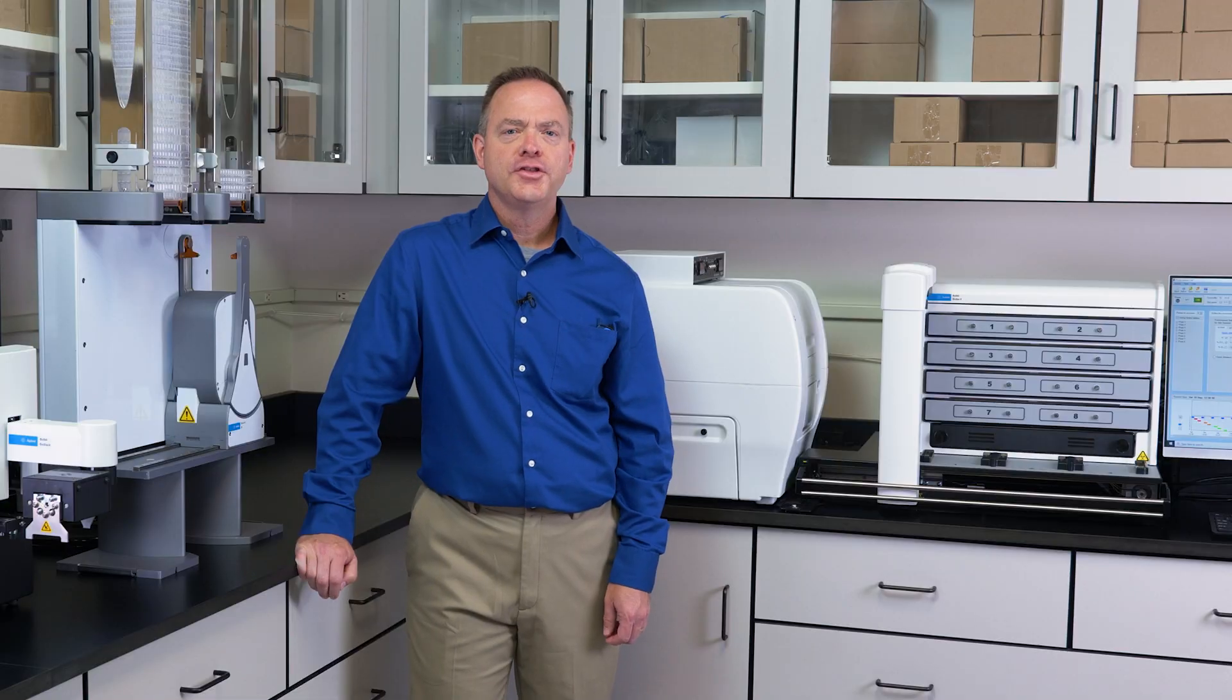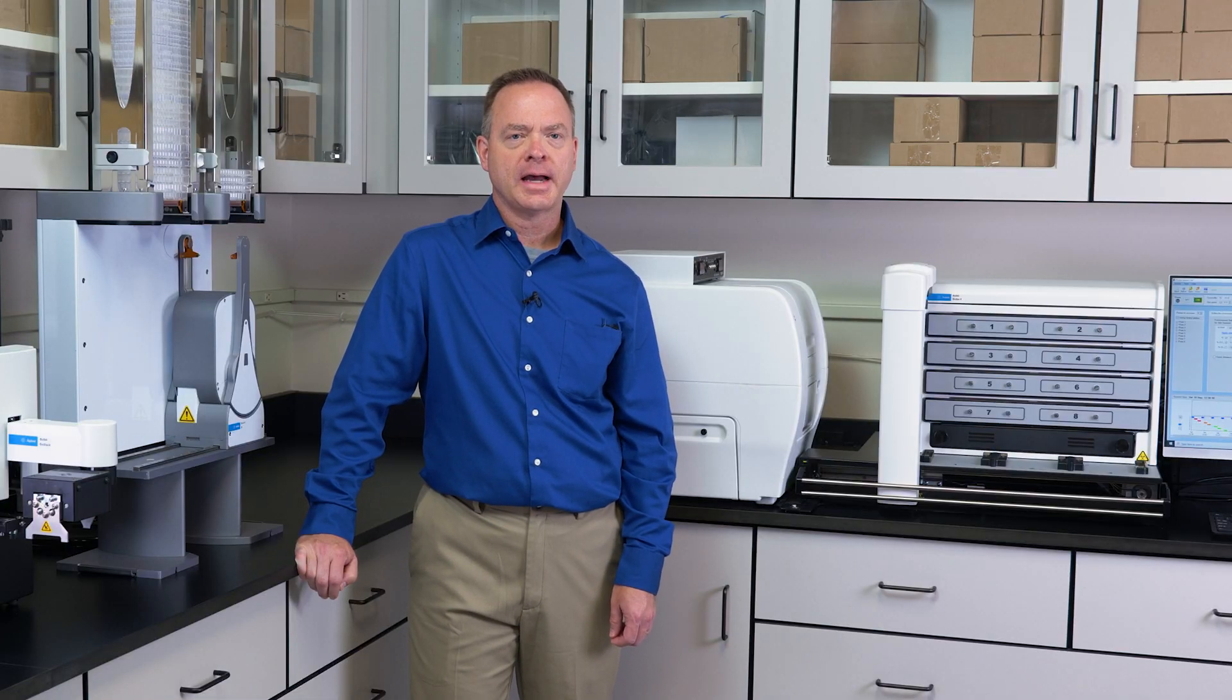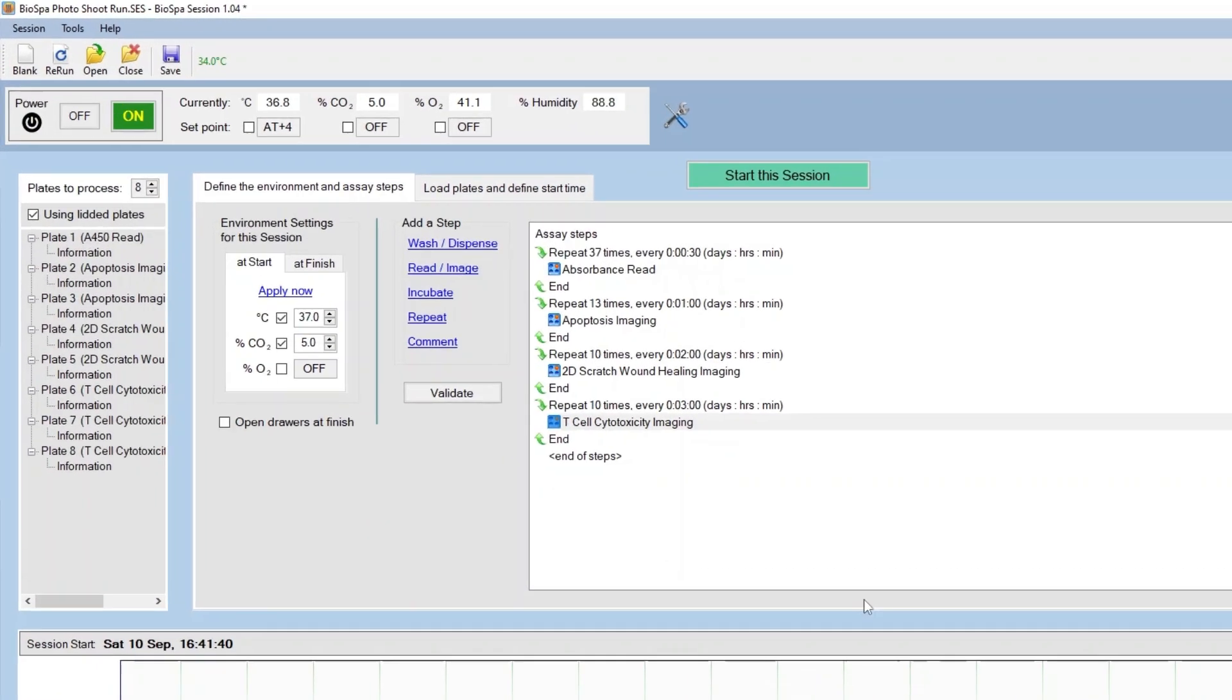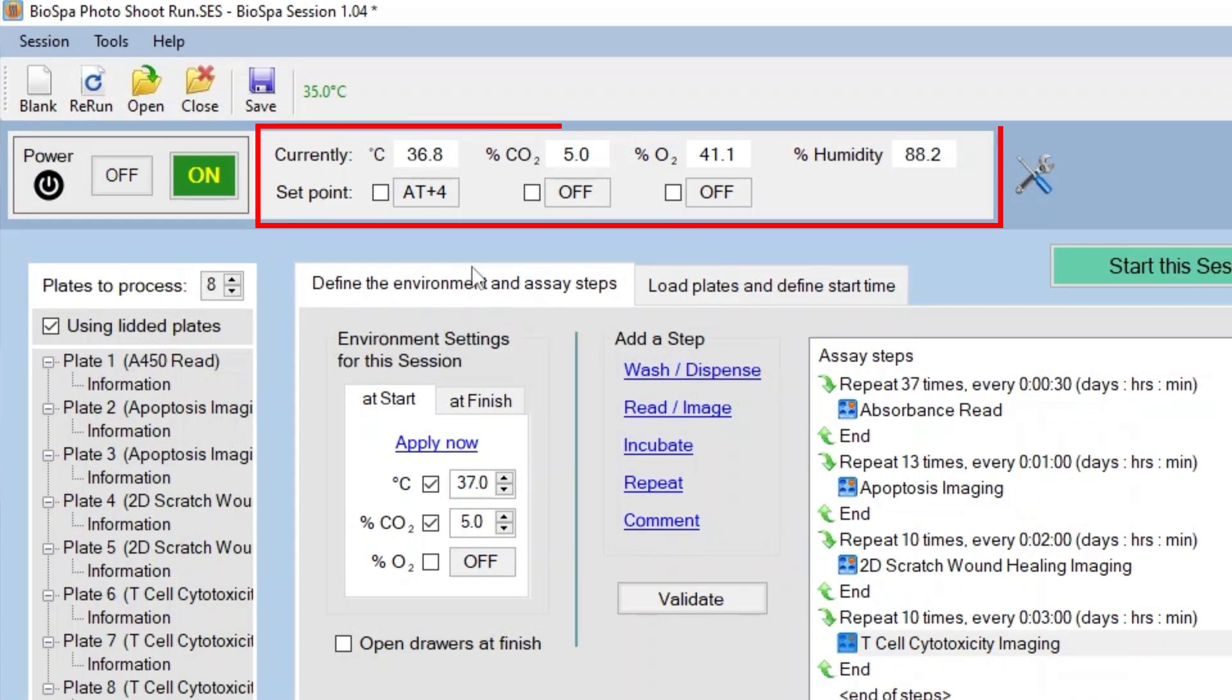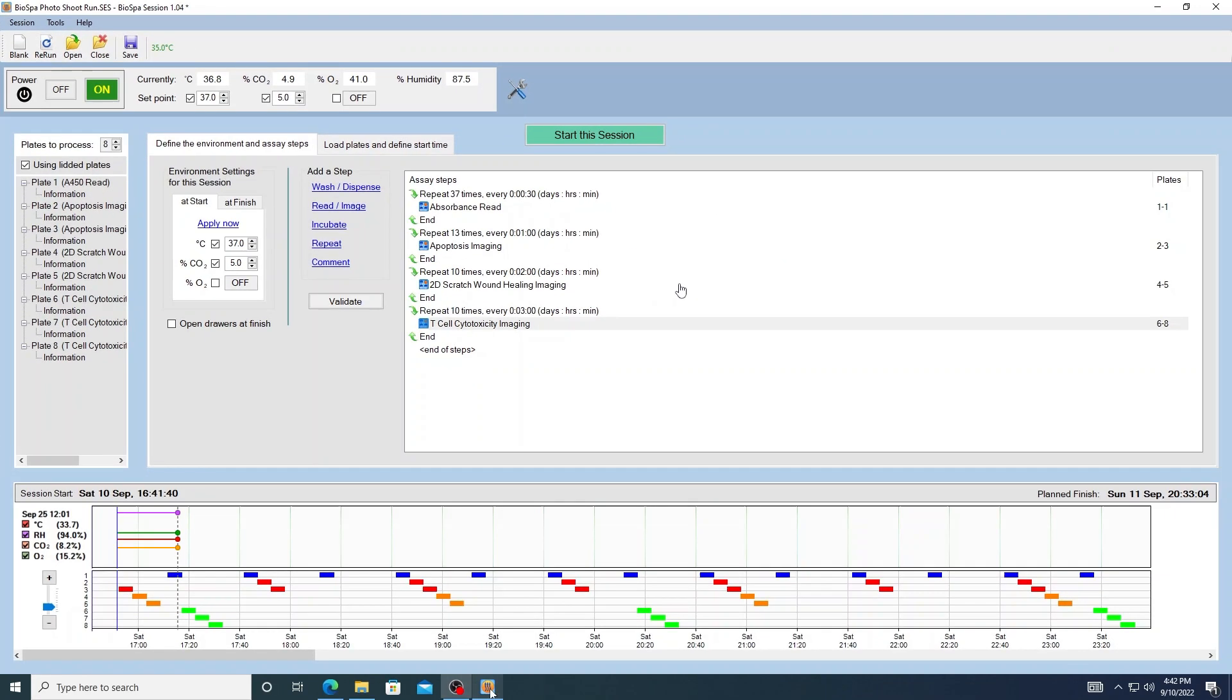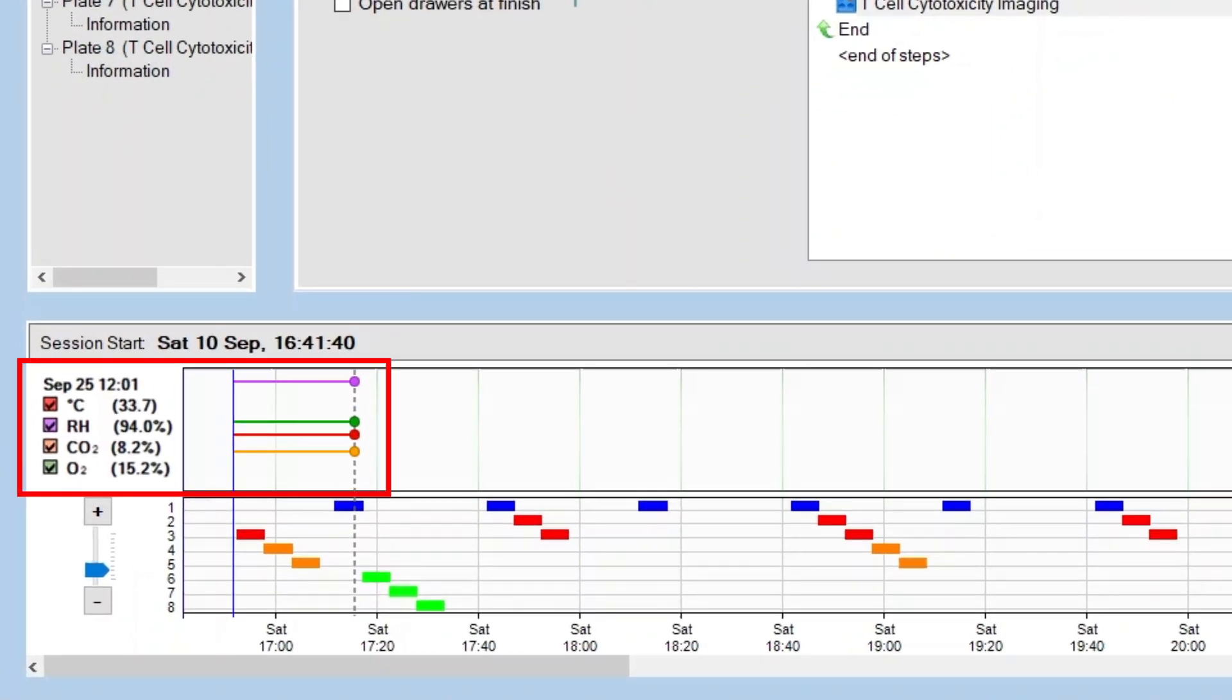The ability to perform kinetic live cell assay procedures is due to the environmental control capabilities within the incubator itself. The BioSpa has the ability to control temperature up to 45 degrees Celsius, allows sparging of carbon dioxide or nitrogen into the incubation chamber and contains a water pan to ensure proper humidity is maintained. Temperature and gas concentrations can be controlled by the user and all metrics are tracked and can be reported during the lifetime of the run.